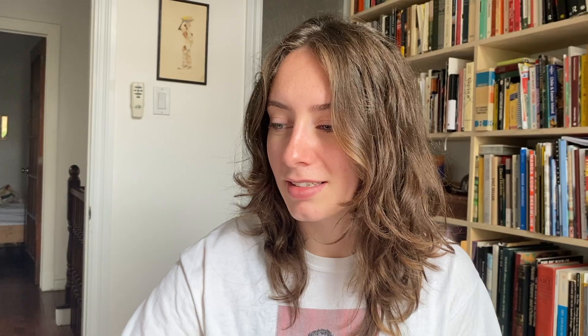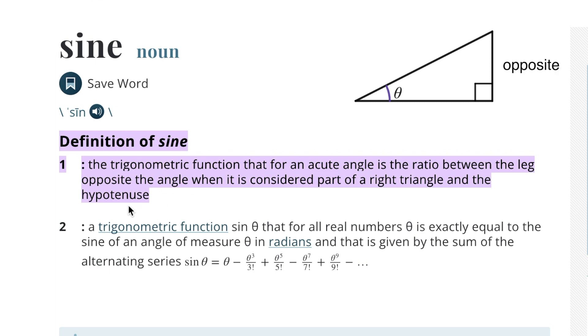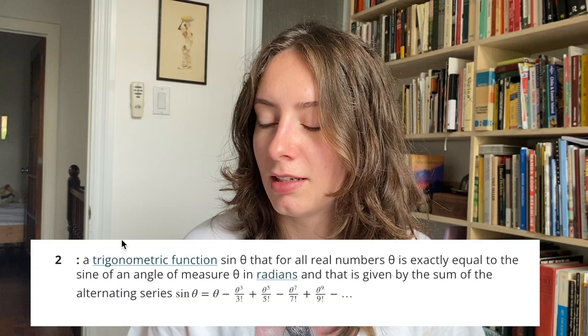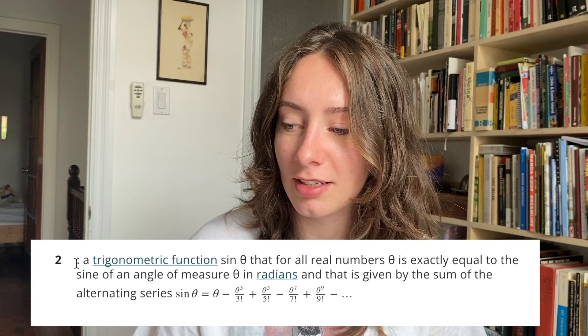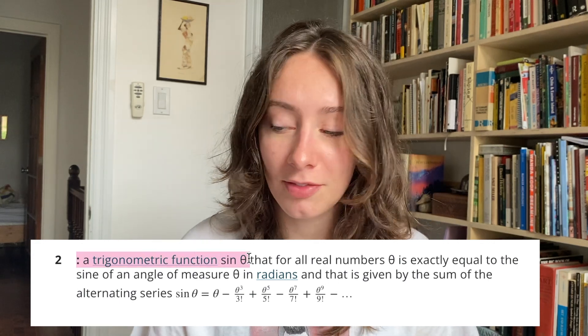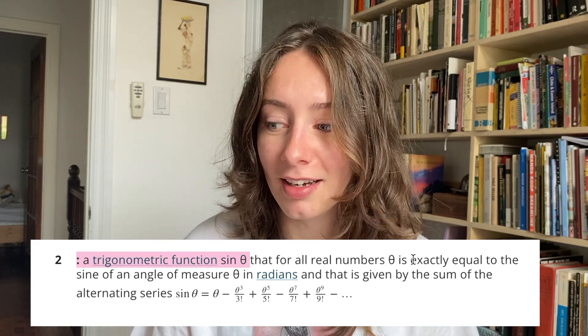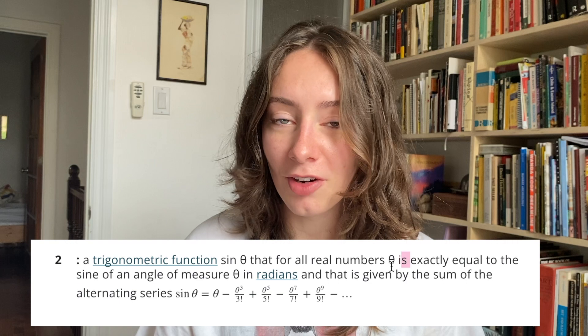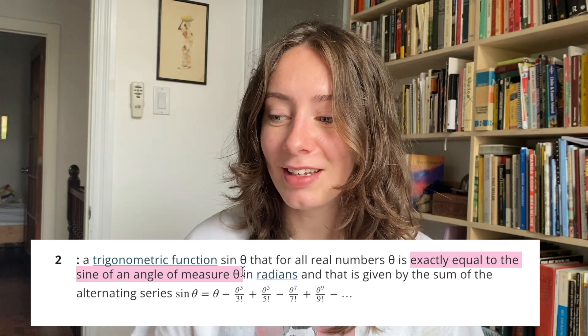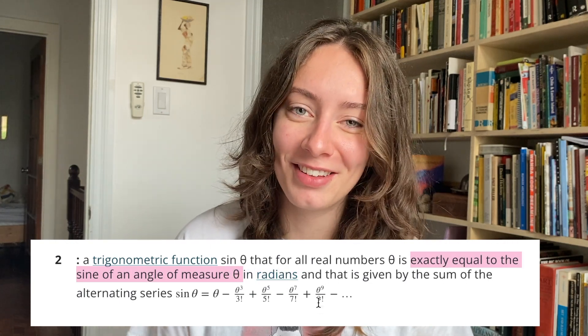It says: definition of sine is the trigonometric function for an acute angle that is the ratio between the leg opposite the angle when it is considered part of a right triangle and the hypotenuse. Okay, that's the Soh-Cah-Toa. The second definition: it's a trigonometric function, sine theta, that for all real numbers theta is exactly equal to the sine of an angle theta.